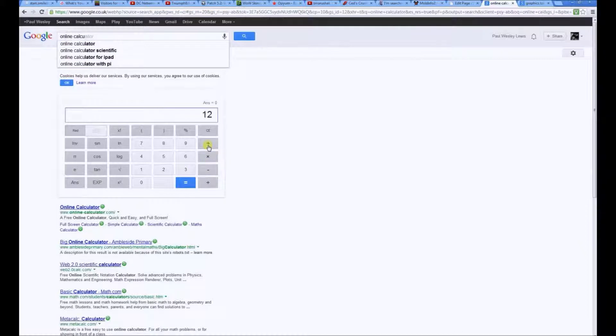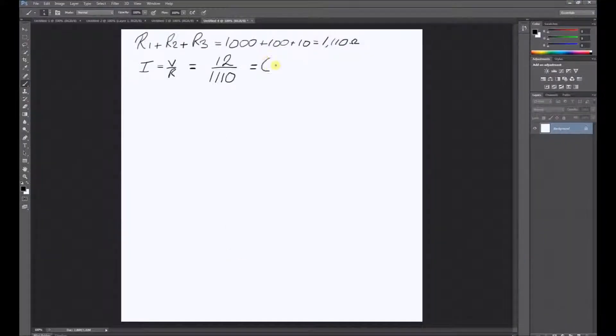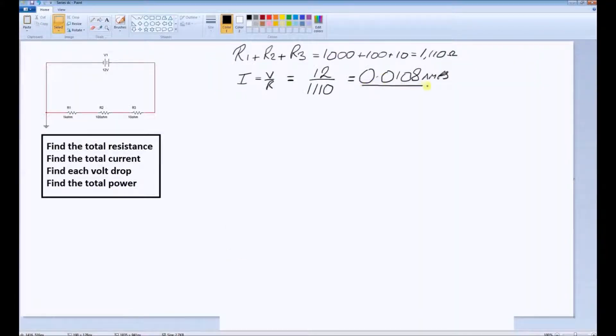12 divided by 1110 gives us a total current of 0.0108 amps, and we can underline that.